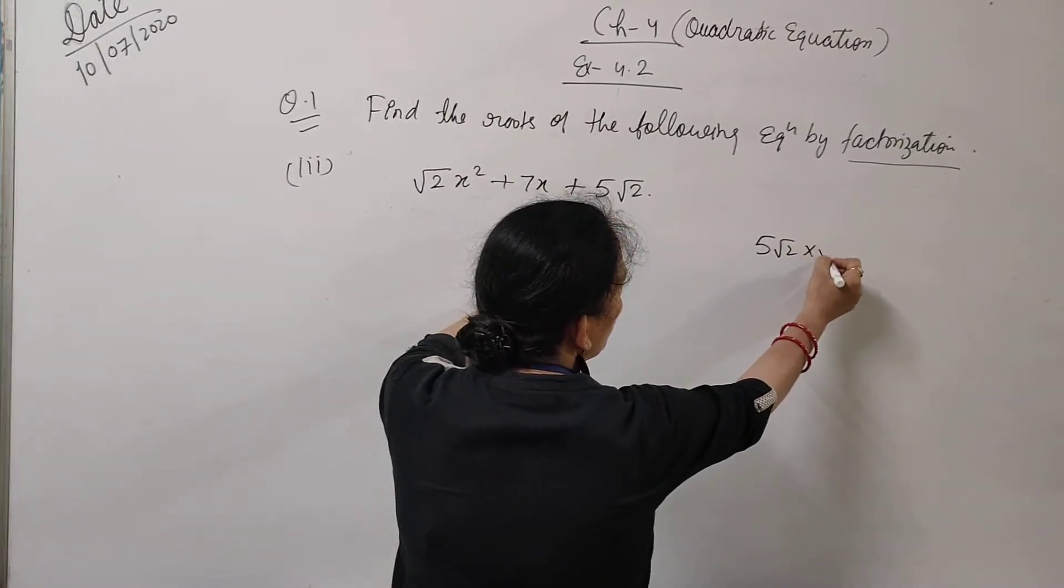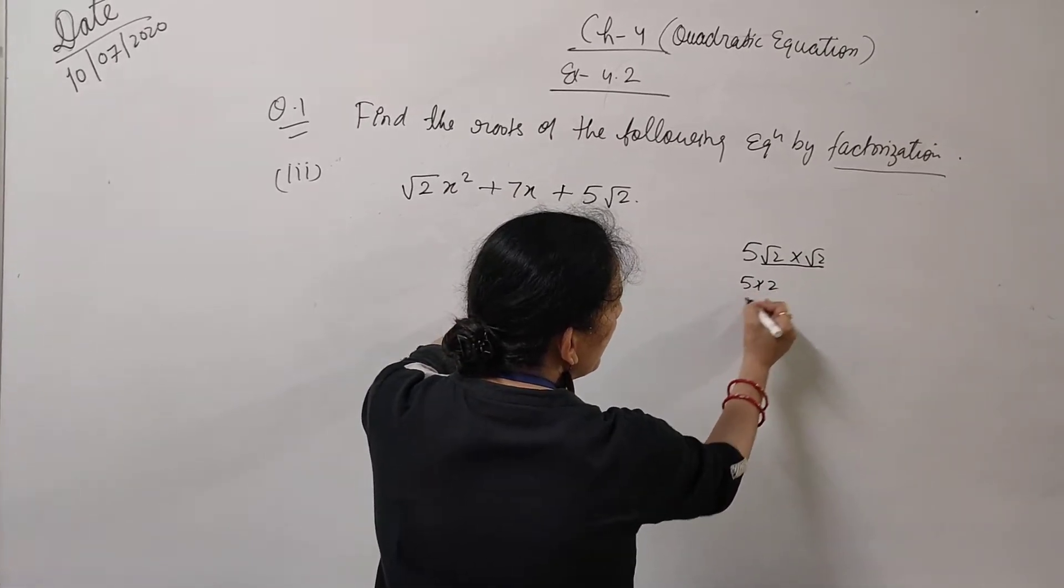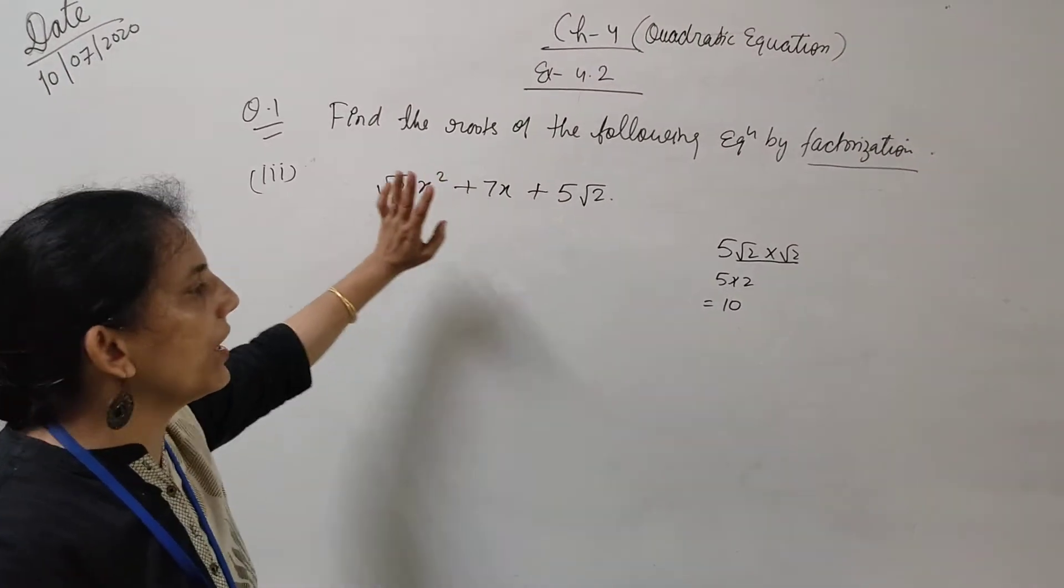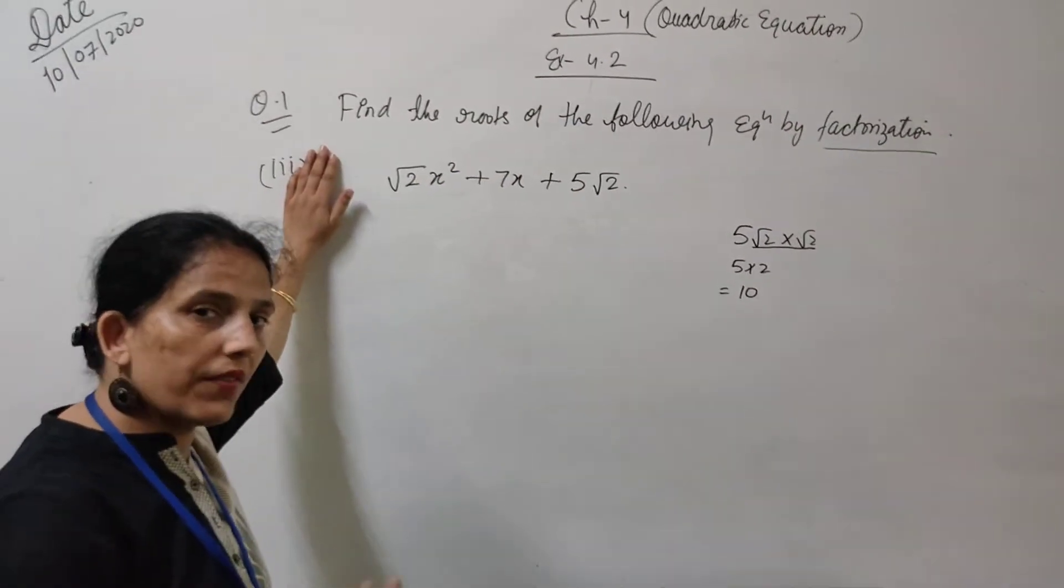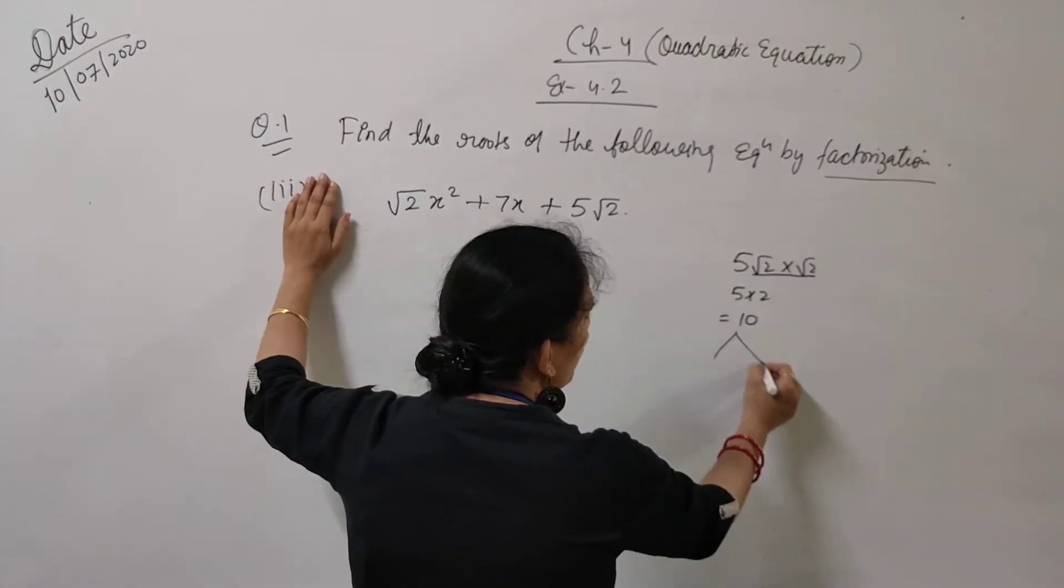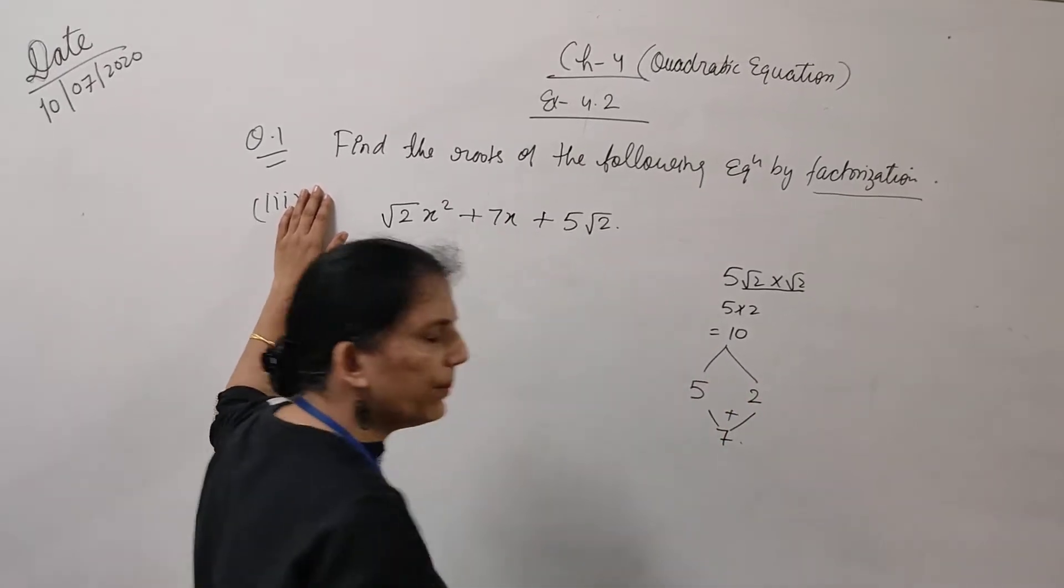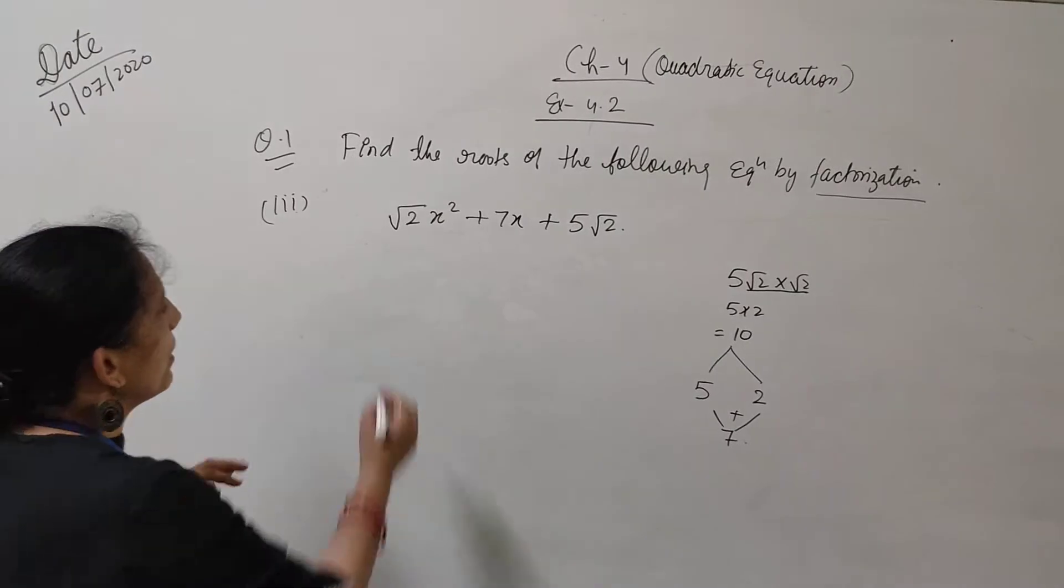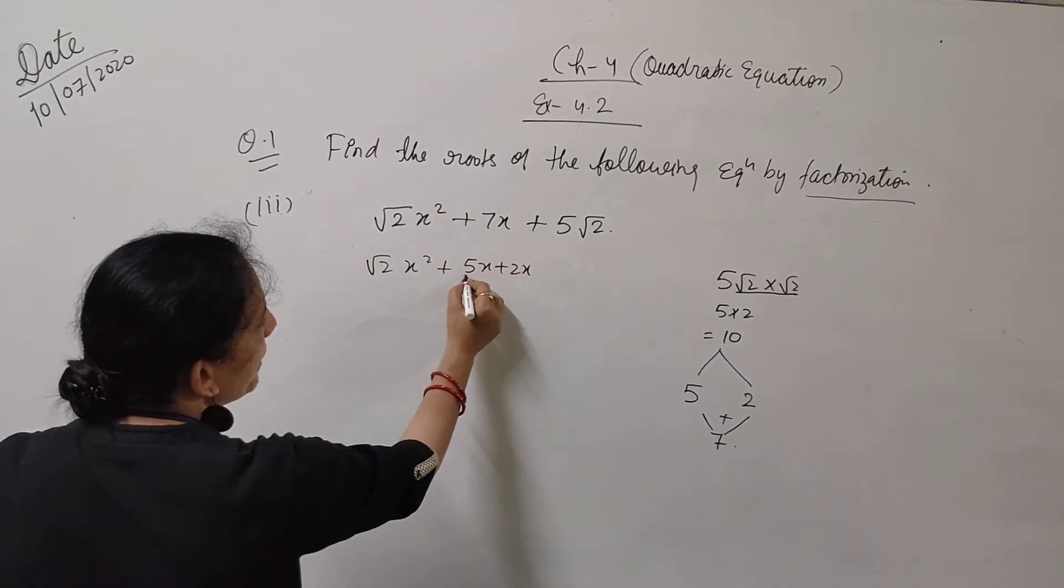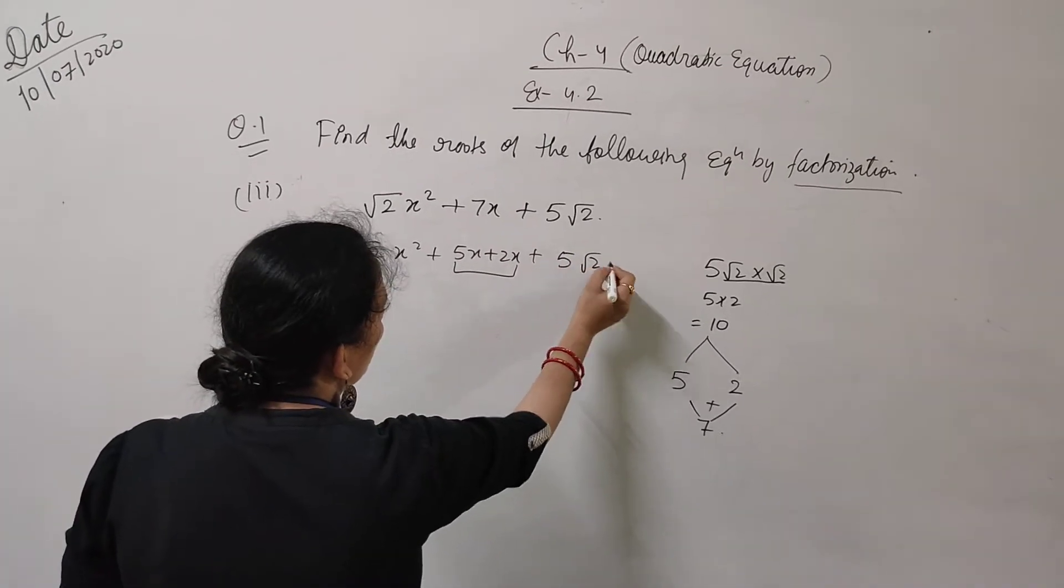So everything is positive, therefore no sign changes. What do you take? 5√2 into √2. So 5 into 2 is 10. What are the factors of 10 whose sum is 7? Simple - 5 and 2, because 5 plus 2 is 7. So again we are going to take factors 5 and 2 so the sum can be 7. So √2x² plus 5x plus 2x plus 5√2.